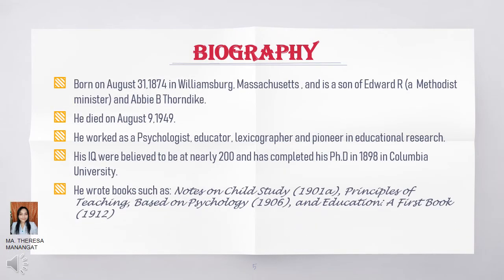Edward Lee Thorndike was born on August 31, 1874 in Williamsburg, Massachusetts, and is a son of Edward R., a Methodist minister, and Abby B. Thorndike. He died on August 9, 1949. He worked as a psychologist, educator, lexicographer, and he is a pioneer in educational research. His IQ was believed to be nearly 200 and he completed his PhD in 1898 at Columbia University. He wrote books such as Notes on Child Study in 1901, Principles of Teaching Based on Psychology in 1906, and Education: a first book in 1912.